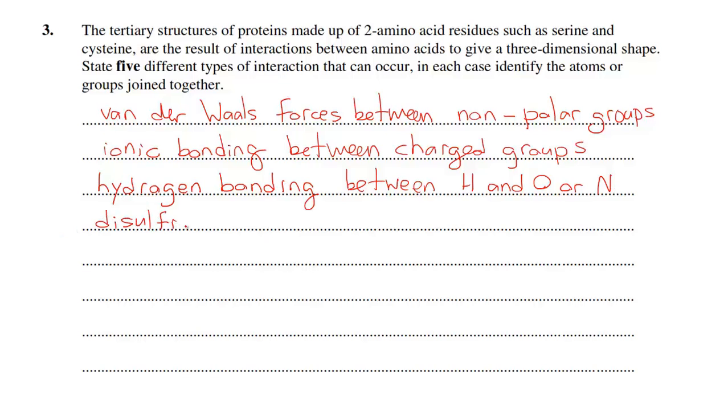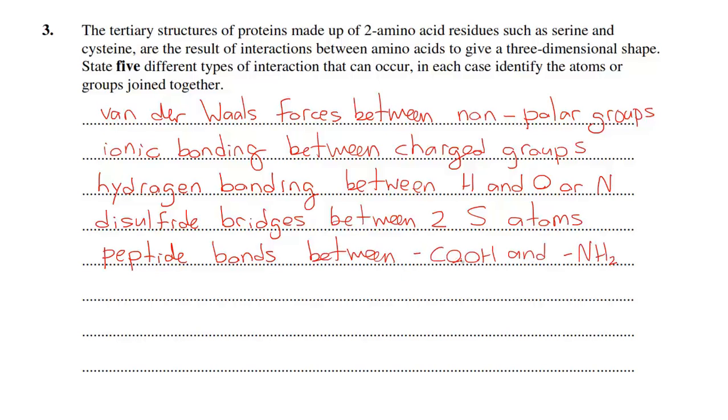Next is a disulfide bridge between atoms of sulfur, two sulfur atoms. Then peptide bonds between side chains that have a COOH group and an NH2 group.